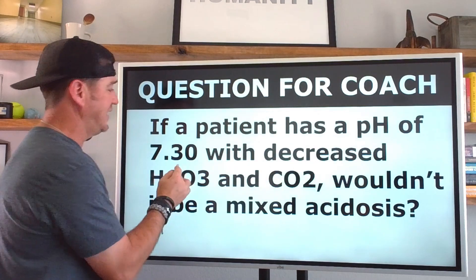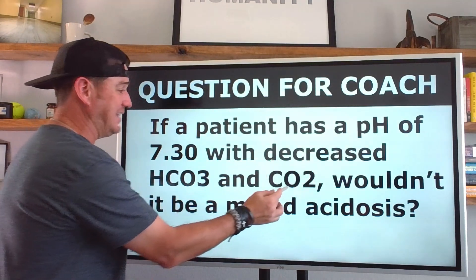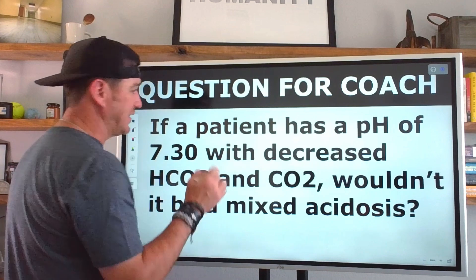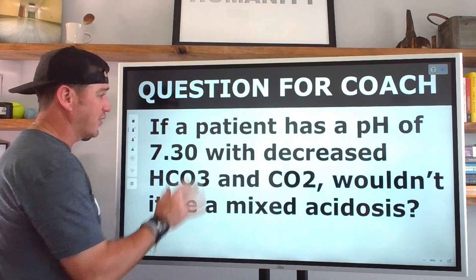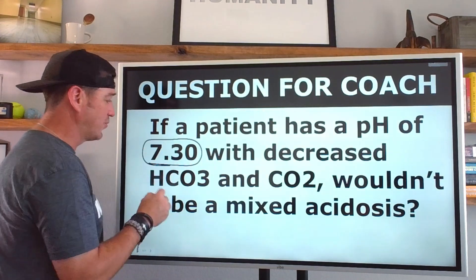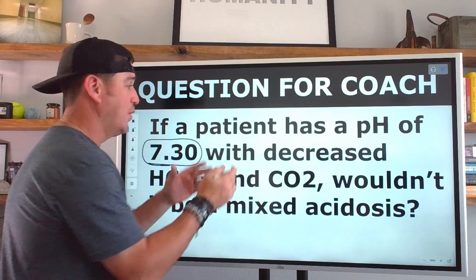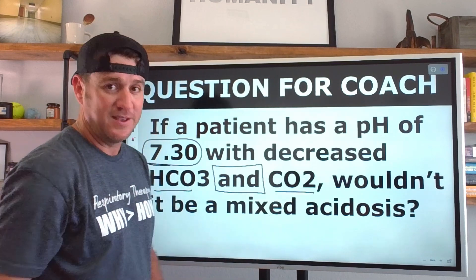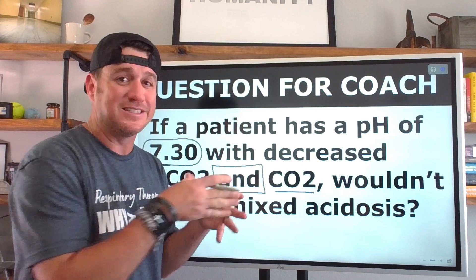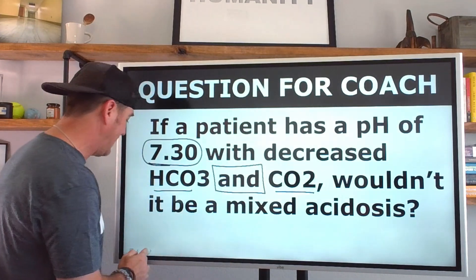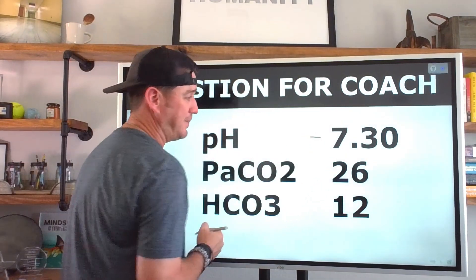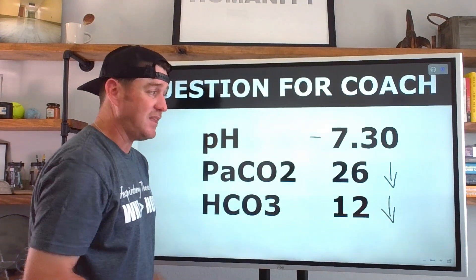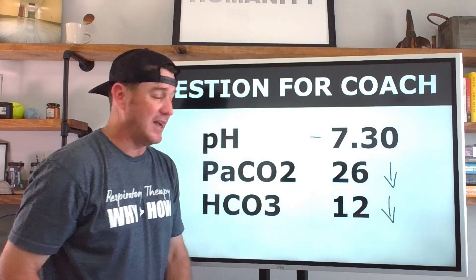Here's the question I got: if a patient has a pH of 7.30 with decreased bicarb and CO2, wouldn't it be a mixed acidosis? Before we go further, I want to point out some key components to this question. We have a decreased pH of 7.30, with a decreased bicarb, and — the most important word here — and CO2. Both of these are decreased, and we have an acidosis.